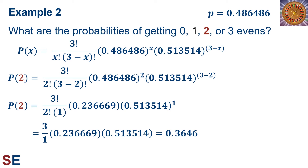Now for the probability of seeing 2 evens. The probability is 3 factorial divided by 2 factorial times 3 minus 2 factorial, all multiplied by 0.486486 squared times 0.513514 to the 3 minus 2 power. The factorial part simplifies to 3. The 0.486486 squared equals 0.236669, and 3 minus 2 equals 1, so 0.513514 stays the same. Multiplying all of this out gives us 0.3646.